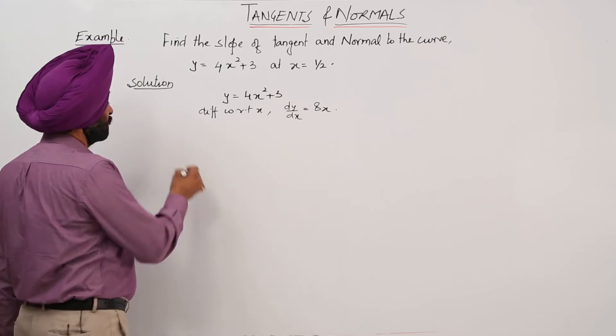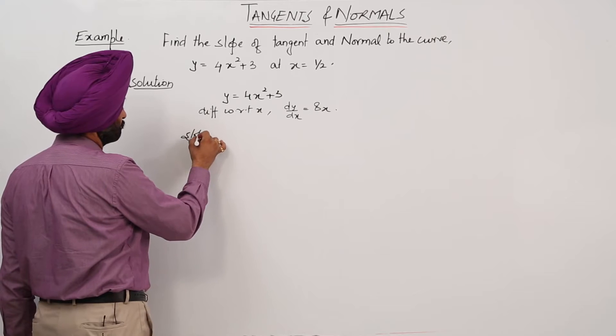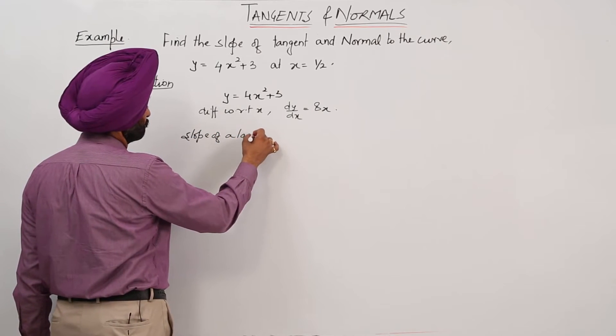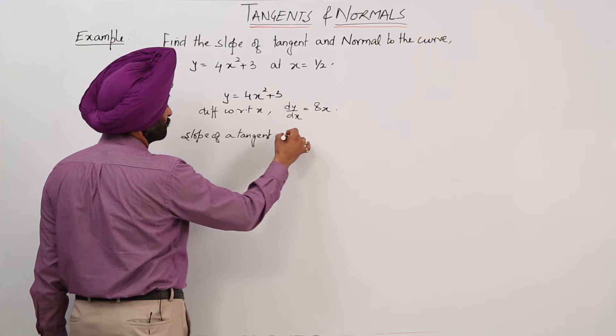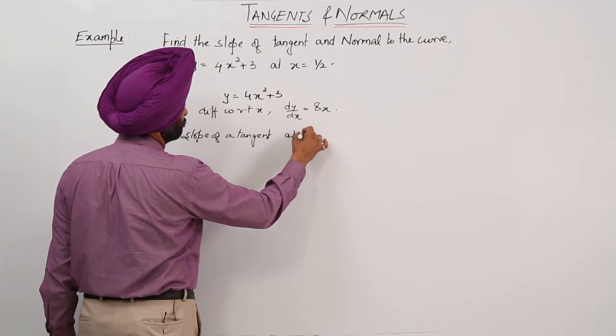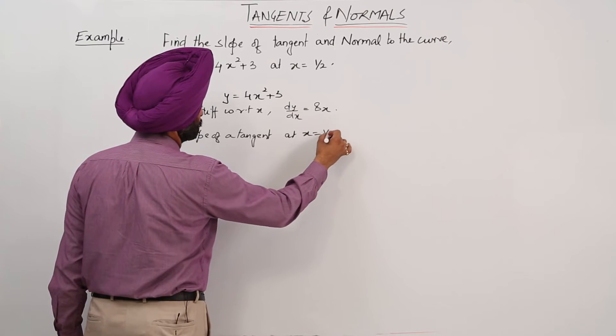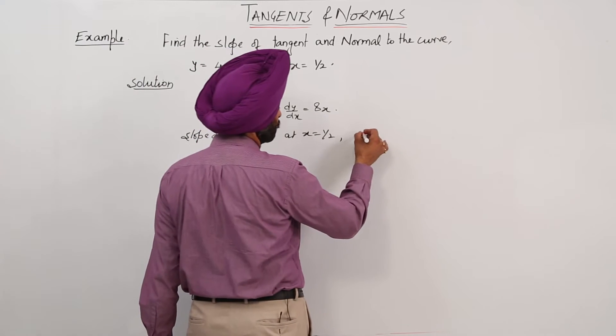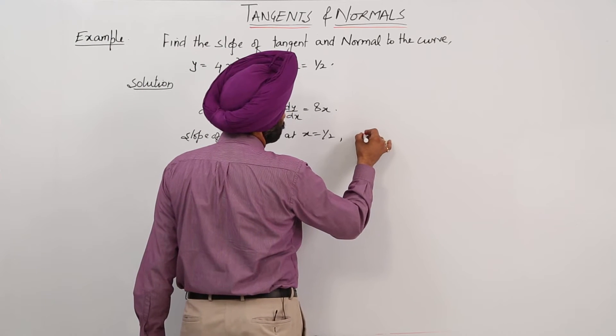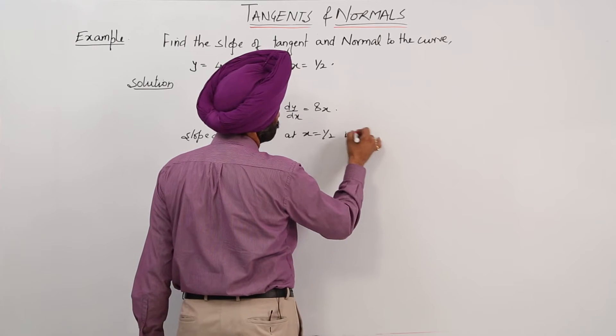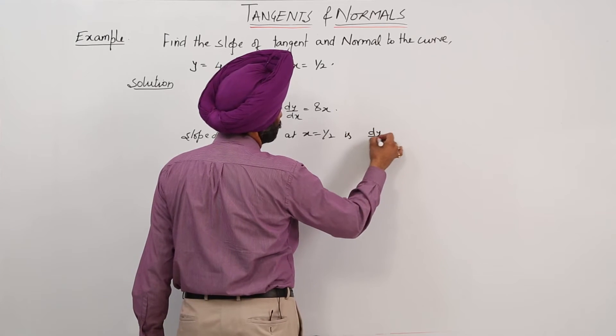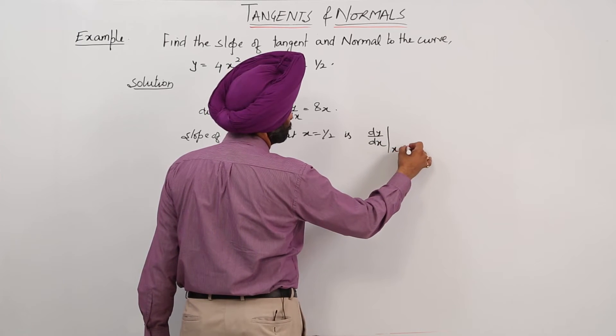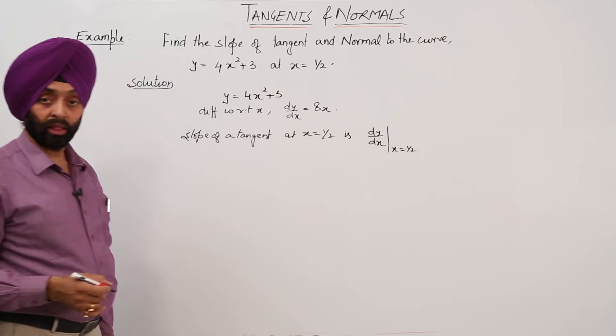First thing now, slope of tangent at x equals 1/2. We have to find the slope when x is 1/2. At x equals 1/2, dy/dx at x equals 1/2.